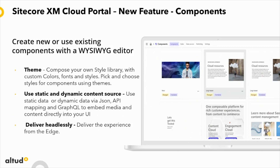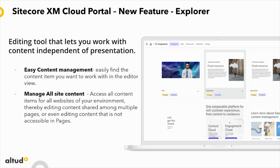Another feature is Components. You have themes that you can now create — compose your own style library by creating custom colors, fonts, and styles. You can pick and choose styles for components using these themes. You can bring together different elements to create components, such as text boxes, images, and sections. You can also link the component to either static content added on the component, or use dynamic data and embed content from a JSON input, a live API input, or even GraphQL. All of this is delivered headlessly over the edge — all these components are cached and managed from Sitecore Edge and easily rendered.